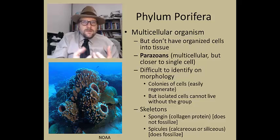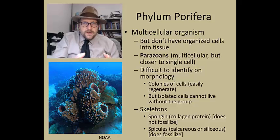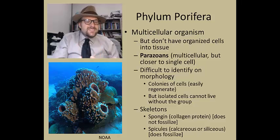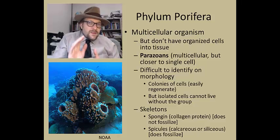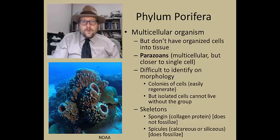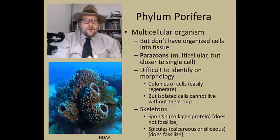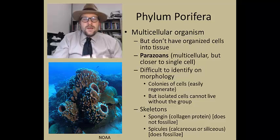The skeletons of sponges are composed of collagen protein called spongin. This spongin is what makes dead sponges so useful to scrub your back in the shower. However, spongin does not really fossilize. What does fossilize are the calcareous or siliceous spicules that help support the framework of the sponges. These hard spicules can be found in the fossil record, despite a lack of body fossils of complete sponges.